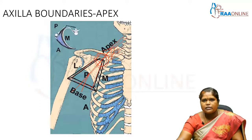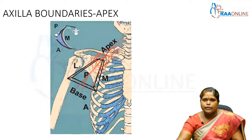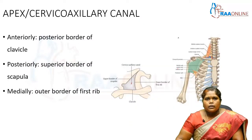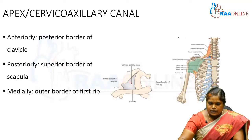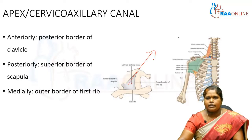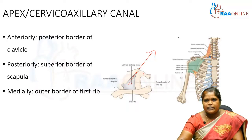From the axilla it reaches the whole upper limb. So the apex of the axilla is like a gateway for the upper limb, through which the main neurovascular bundle enters into the upper limb. Here we can see again this cervico-axillary canal in a transverse or schematic section.